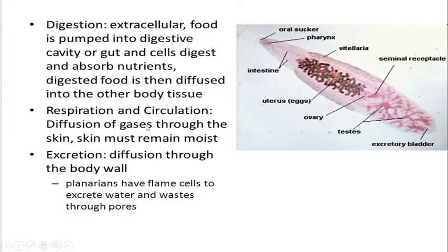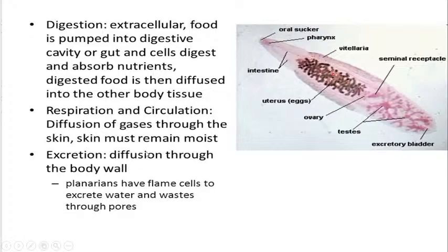Respiration and circulation occur by diffusion of gases through the skin, which must remain moist. For excretion, diffusion occurs through the body wall, and planarians have flame cells as their excretory organs. If asked in MCQs about the excretory organs in planarians or Platyhelminthes, the answer is flame cells — they excrete waste and water through pores.